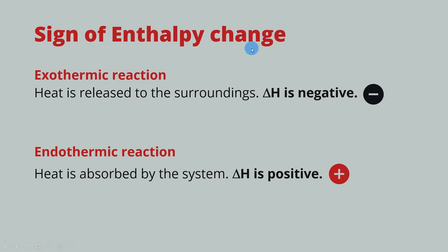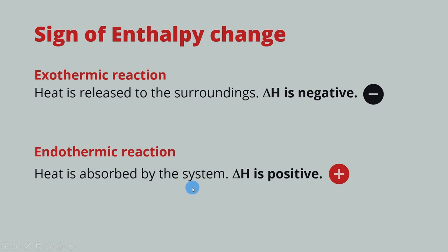Now let's look at the signs of enthalpy change. Enthalpy change is the heat of reaction, and we have two directions of heat change. One is the exothermic reaction, where heat is released from the system to the surroundings — in this case, delta H has a negative sign. Another type is the endothermic reaction, where heat is absorbed by the system and delta H has a positive sign. You must give the correct sign: exothermic reaction means delta H is negative; endothermic reaction means delta H is positive.